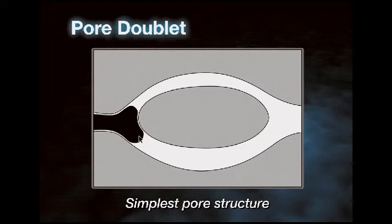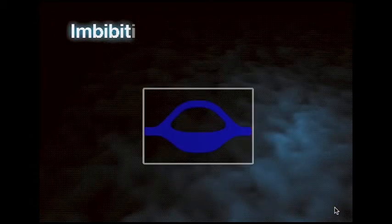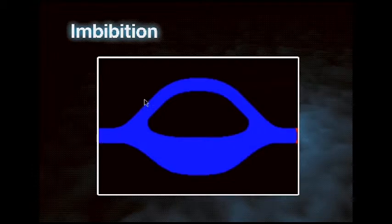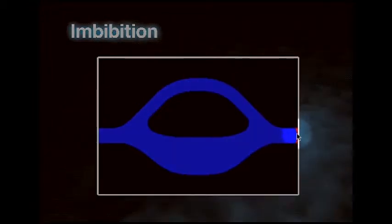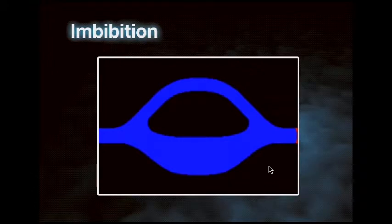Now we will see that as the fluid is moving, it will have to make a decision about which pore to enter. In the pore doublet animation, there is a red fluid and all blue. By the meniscus, we can say the red is the wetting fluid and the blue is the non-wetting fluid. Imbibition is when the wetting fluid displaces the non-wetting fluid — let's take a look.